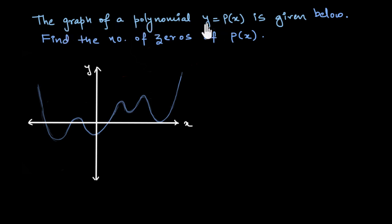The graph of a polynomial y equals p of x is given below. This is the graph that we are talking about. Find the number of zeros of p of x. But before moving towards the solution of this question, let us spend some more time on this graph given here.